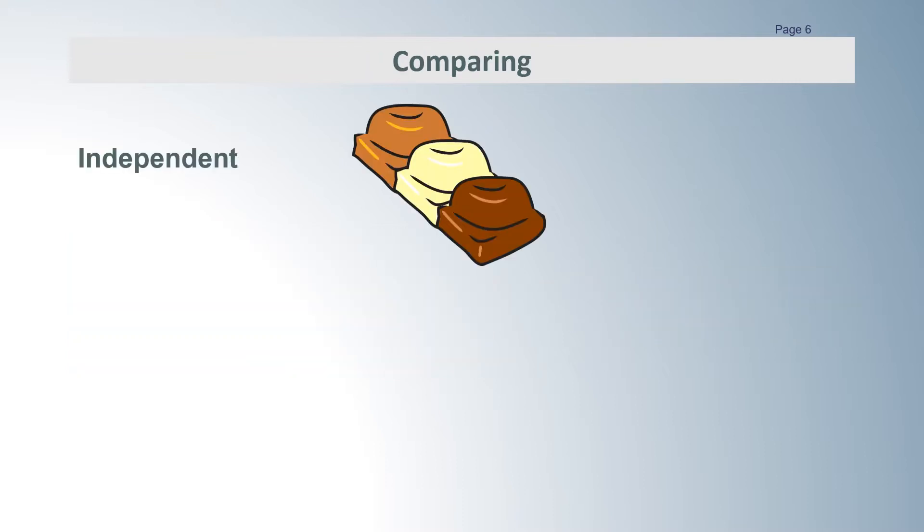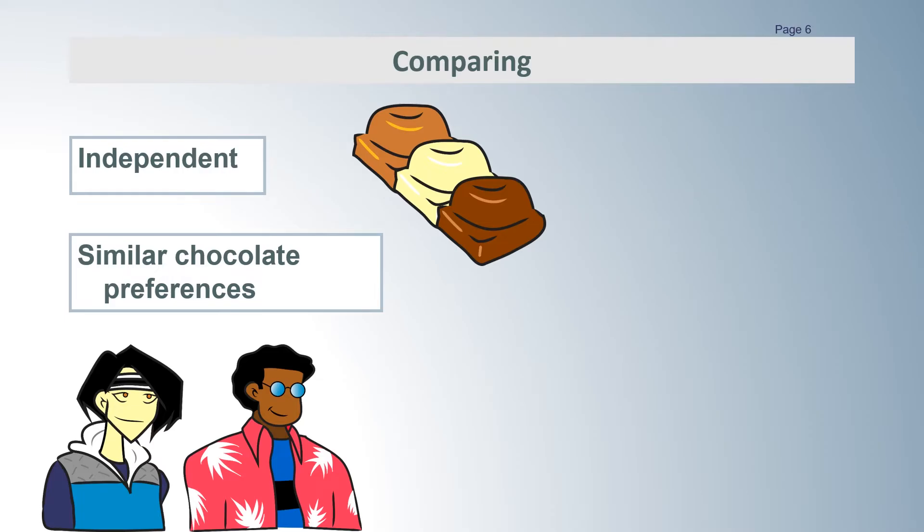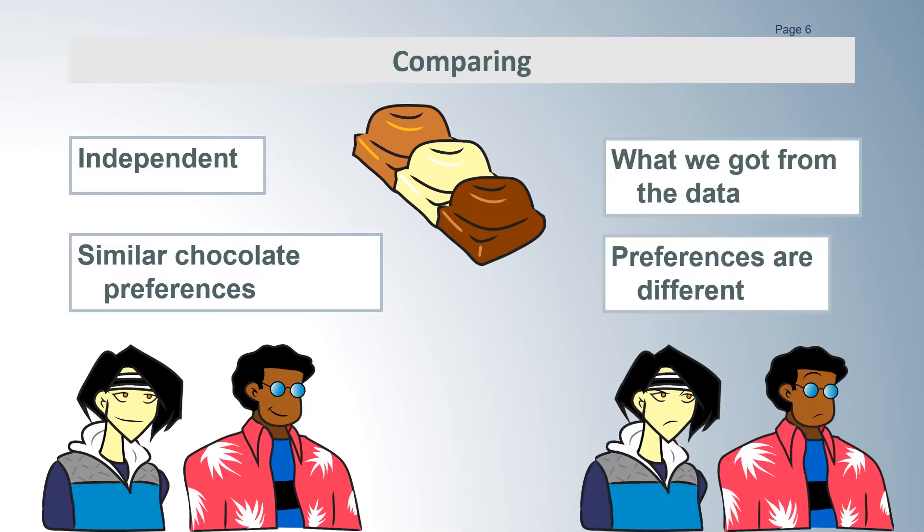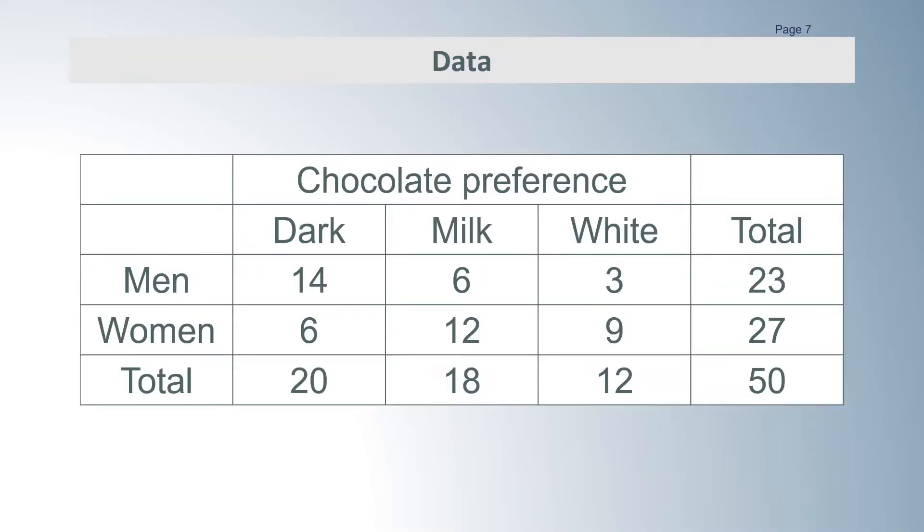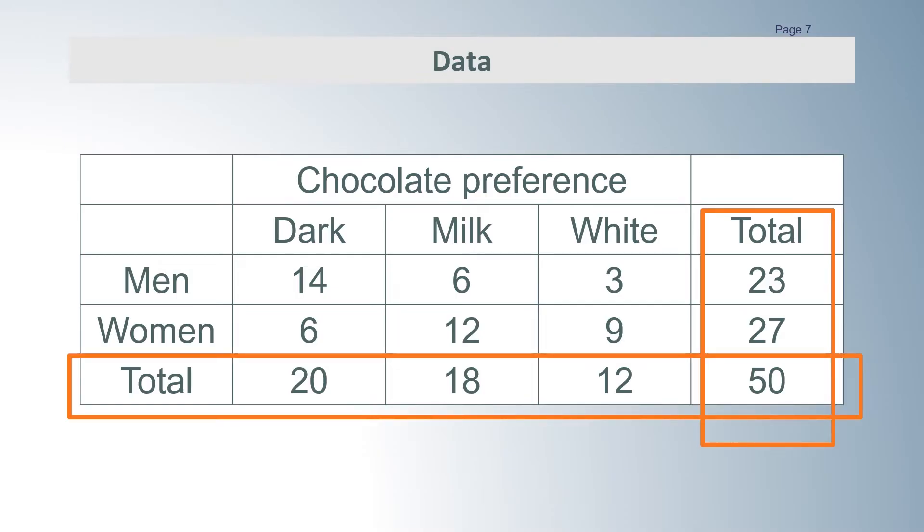The way a Chi-Squared Test works is that it quantifies the difference between what you would expect to happen if there was no relationship—that men and women have the same chocolate preference—and what you got from the sample data. Let's find out what the table would look like if there really was no relationship between gender and chocolate preference. We start with our data table and use the row and column totals and clean out the rest of the table.